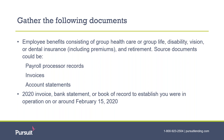One of the requirements of applying for a Paycheck Protection Program loan is that the business had to be operational as of February 15, 2020. You will need to provide an invoice, bank statement, book of record, or other documentation which establishes that the business was in operation at that time.